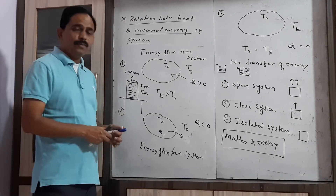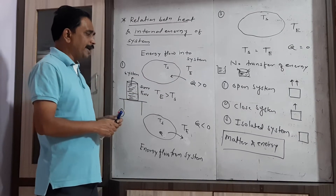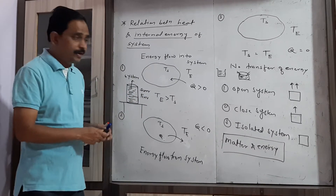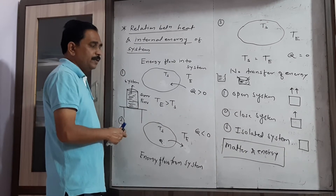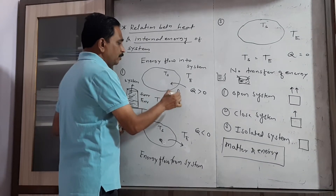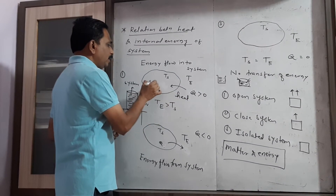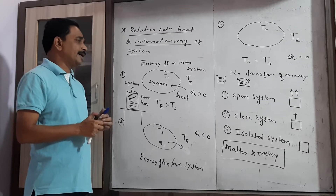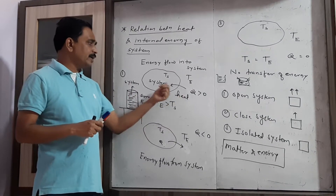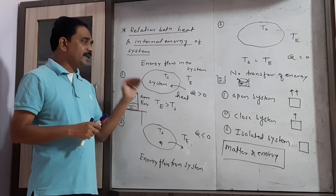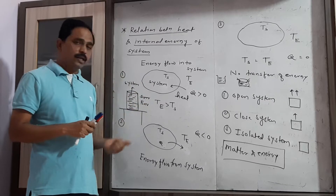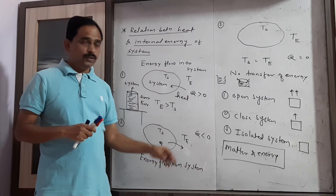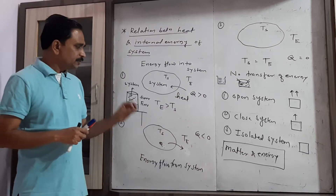We know that heat always flows from a body at higher temperature to a body at lower temperature. So when T_e is greater than T_s, heat flows from the environment into the system. When heat energy flows from environment to system, the internal energy of the system increases — that is, the change in internal energy is positive, greater than zero.